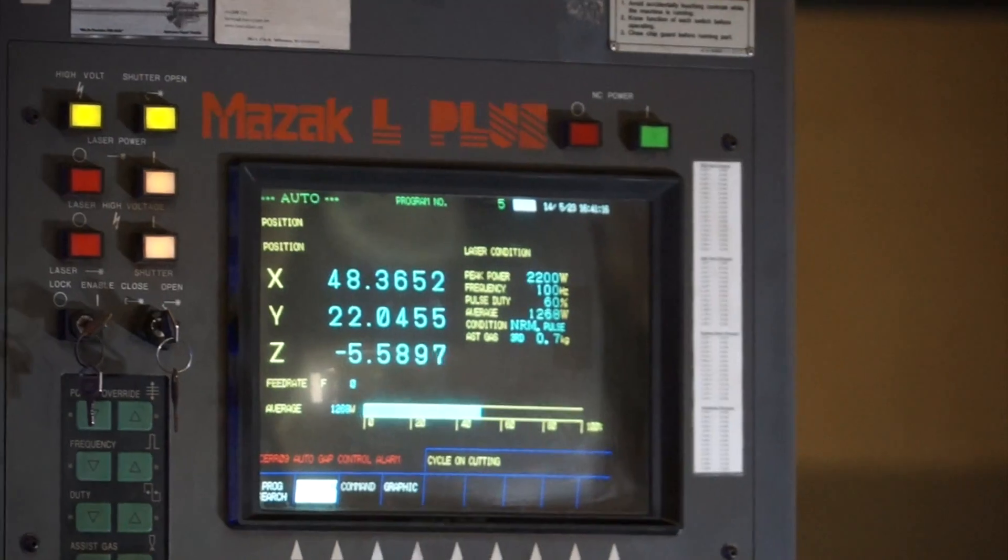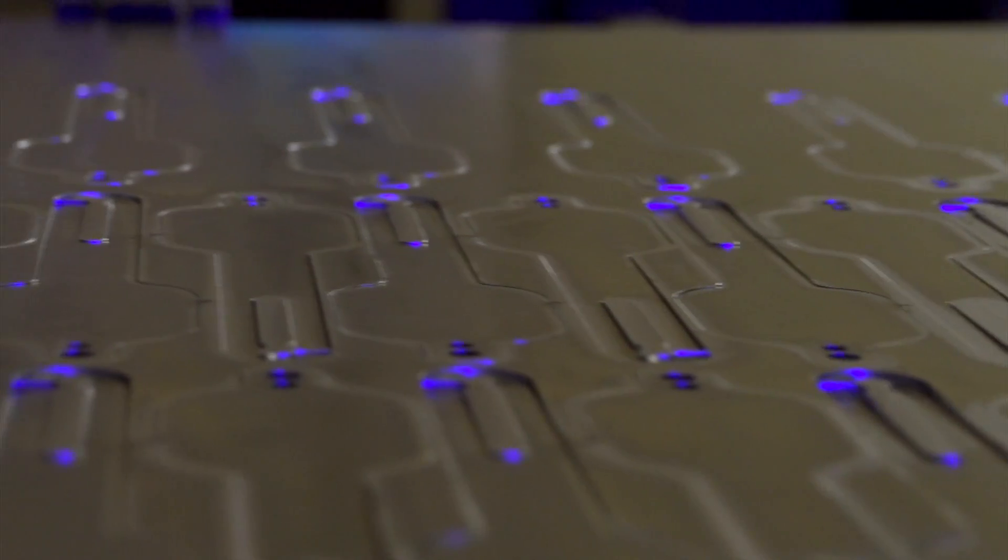Laser cutting allows us to do some things that you can't do in stamping. Stamping, you need some radius for the punch and die to hold up. Here, laser cutting, we can cut sharp corners, tight notches, little voids. Gives you a nice clean edge.